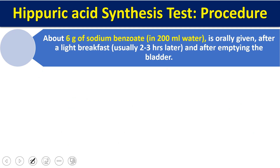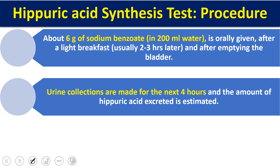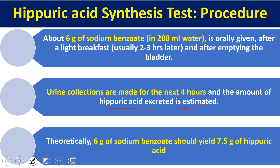In this test, six grams of sodium benzoate dissolved in 200 ml of water is given orally after a light breakfast. The urinary bladder should be completely empty before starting. Urine is then collected for the next four hours. Theoretically, six grams of sodium benzoate should produce 7.5 grams of hippuric acid.